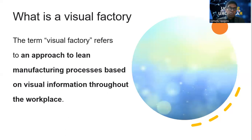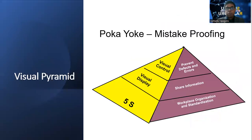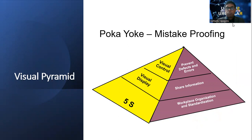When we talk about the visual factory concept, there is a very special subtopic under the visual factory. It is called the visual pyramid. Now you can see the visual pyramid. There are mainly three elements in the visual pyramid.